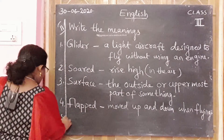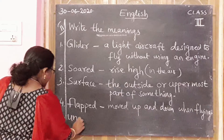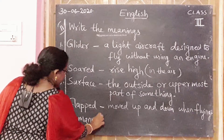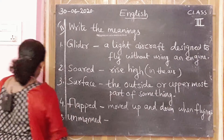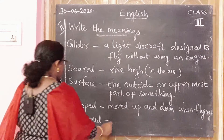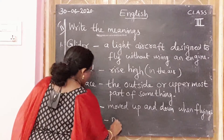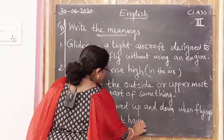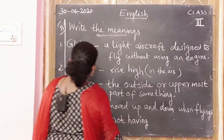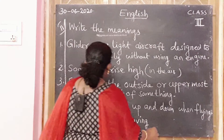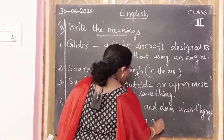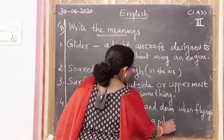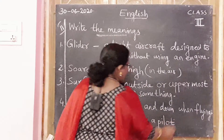Unmanned. Unmanned means not having a pilot. Flat — flapped means move up and down when flying.